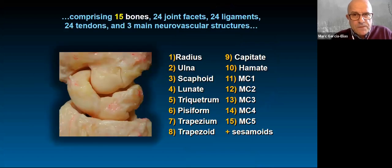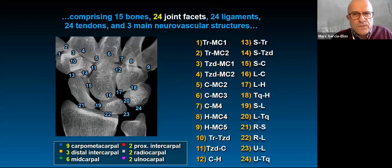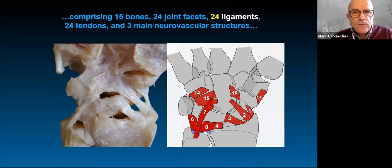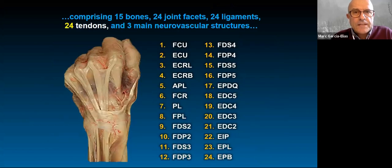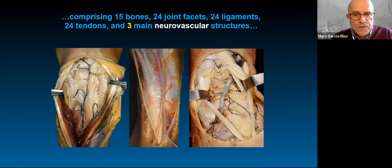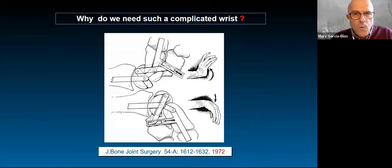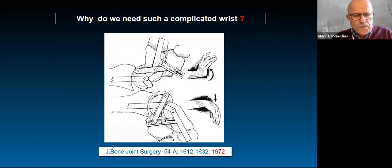It comprises 15 bones, 24 joint facets — that means 24 different contacts — approximately 24 ligaments (only 24 are meaningful), 24 tendons, and also three neurovascular structures. Why do we need such a complicated wrist? This is the first question I would like to think about.